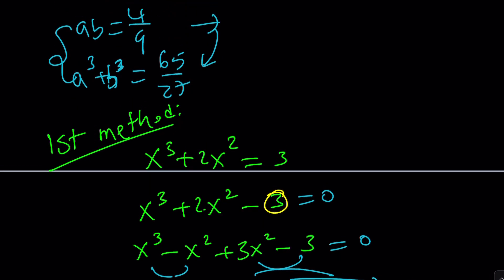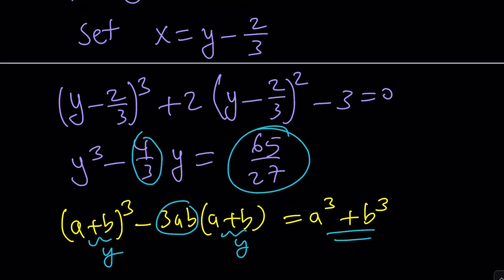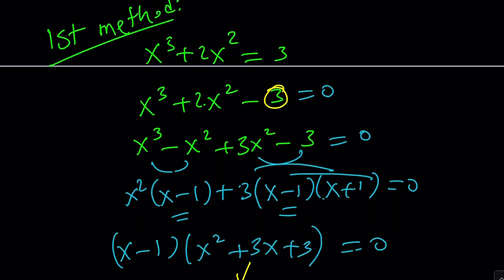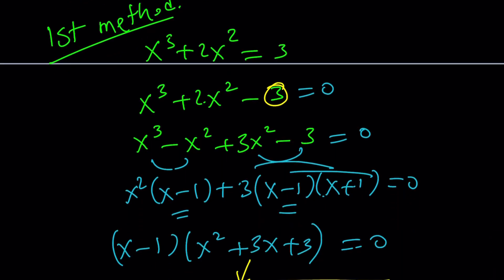With this fourth method, we did try to use the cubic formula. Obviously, things get really messy, but guess what? At the end, you're going to get a nice solution. With the first method, we broke down the 2x squared into two pieces like this.